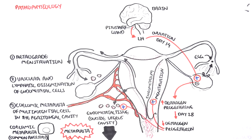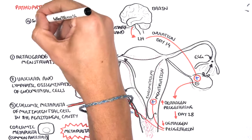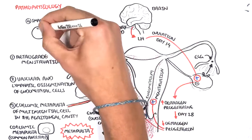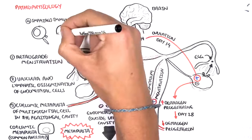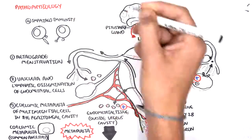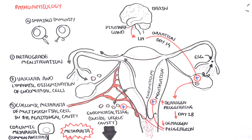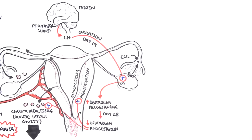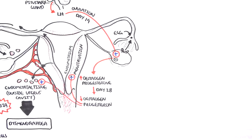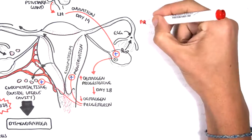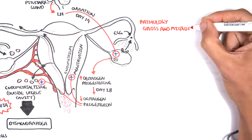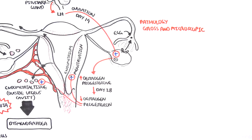The fourth theory of endometriosis is an impairment of the immune system. Now let's focus on the pathology of endometriosis. It can be gross or microscopic depending on the severity or type, and there are three pathological forms.